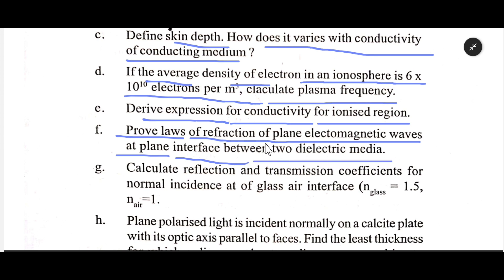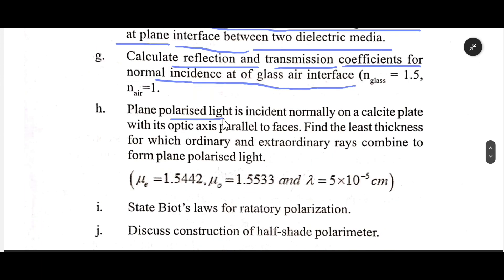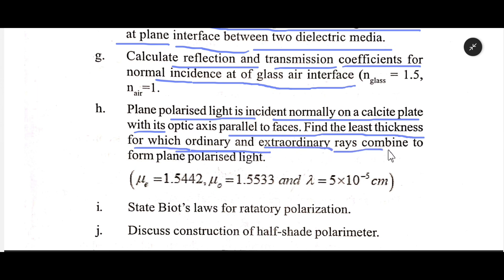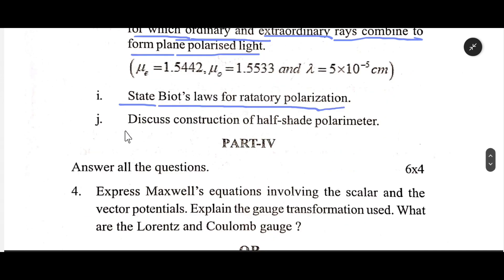Prove the laws of refraction of plane electromagnetic waves at a plane interface between two dielectric media. Calculate the reflection and transmission coefficients for normal incidence at a glass-air interface. Plane polarized light is incident normally on a calcite plate with its optical axis parallel to the face; find the least thickness for which the ordinary and extraordinary rays combine to form plane polarized light. State Biot's law for rotatory polarization and describe the construction of a half-shade polarimeter.